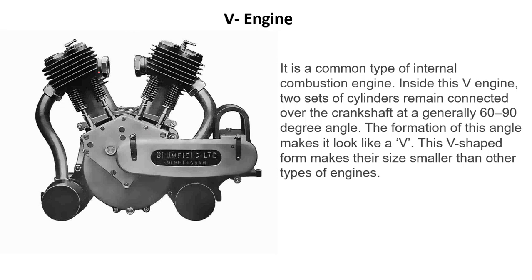That's why this is called a V engine. The formation of this angle makes it look like a V. This V-shaped form makes their size smaller than other types of engines. Because of the V shape, we are using this space more efficiently, so these engines are compact and smaller in size. You can get more IC engines connected to the crankshaft in a small space, giving you better power.